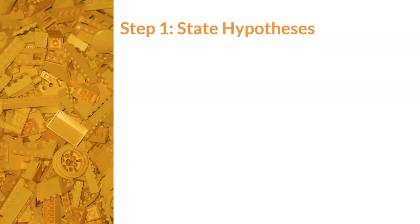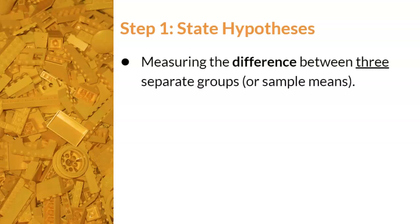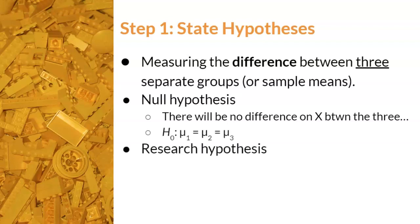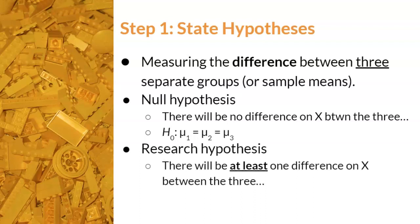Step one, the yellow Lego, is to state hypotheses. Since we are comparing three separate groups, we are measuring the difference between the sample means. The written statement for the null hypothesis must include the word difference and specify that there are three or more groups being compared. If there truly is no difference between the hypothetical population means, then the means will all equal each other. The research hypothesis will reflect that there is at least one difference between the three samples. This is the simplest version of a research hypothesis for a one-way ANOVA, because there can be multiple different ways that the groups can be different from each other. For example, the first group could be different from the second group but not from the third group. As such, there will be no notation for this generic research hypothesis.